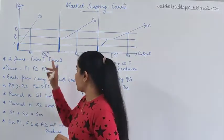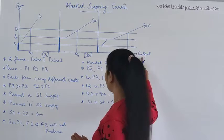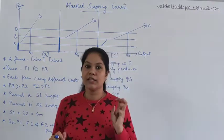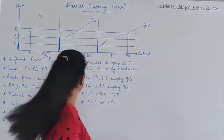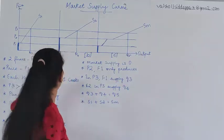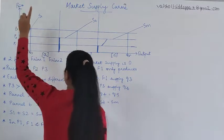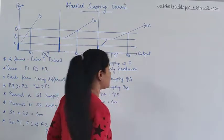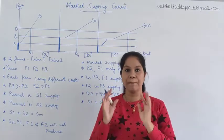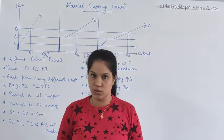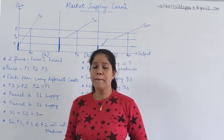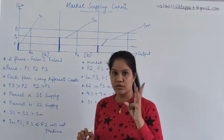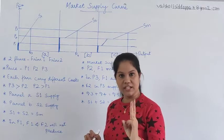When talking about firm A, on the x-axis we have output: Q3, Q4, and Q5 — three different output quantities. On the y-axis we have three different prices: P1, P2, and P3, where P2 is greater than P1 and P3 is greater than P2. So we have three different prices and three different quantities.